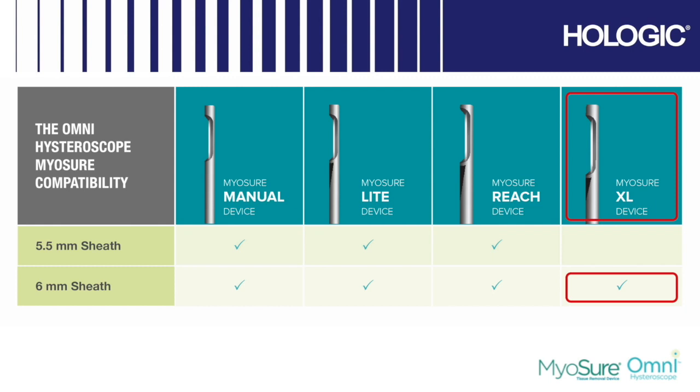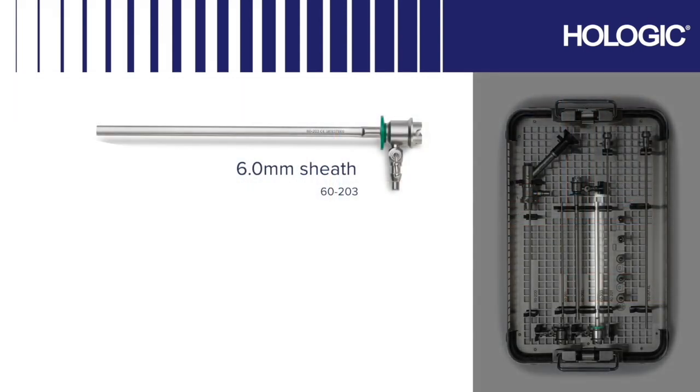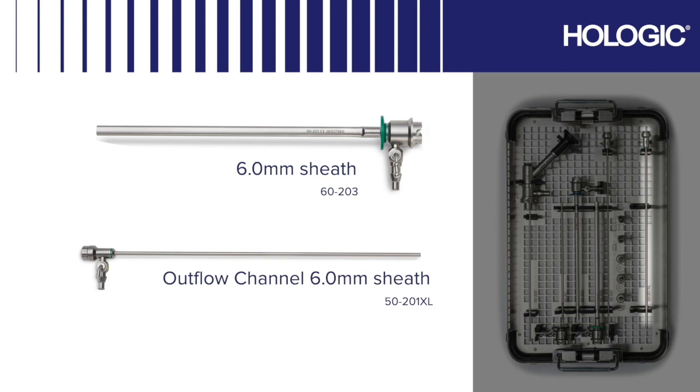For use with the MyaSure XL handpiece, select the green 6mm sheath indicated 60-203 on the tray and the green colored outflow channel indicated 50-201 XL on the tray.